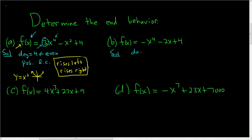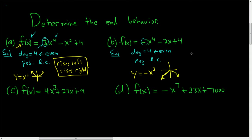In this case the degree is again 4, so we have an even degree. The leading coefficient is negative 1, so we have a negative leading coefficient. The simplest function with even degree and a negative leading coefficient is negative x squared. That looks something like this — it falls left and falls right. Therefore our original polynomial also falls left and falls right.